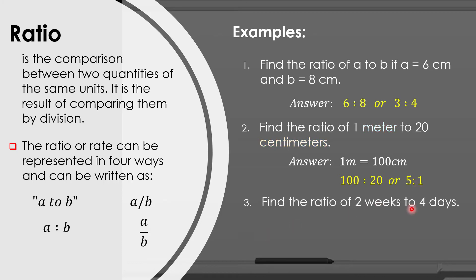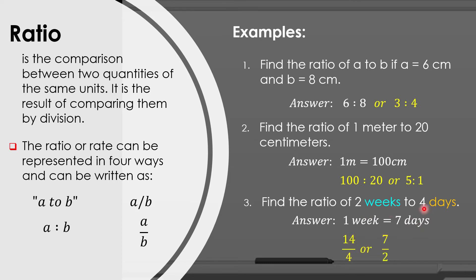For example number three: find the ratio of 2 weeks to 4 days. Same as problem number two, the units weeks and days are different, so we need to convert weeks into days. Since 1 week is equal to 7 days, then 2 weeks is equal to 14 days over 4, in which 14 over 4 is equal to 7 over 2. Remember that a ratio can be written in colon form or in fraction form.